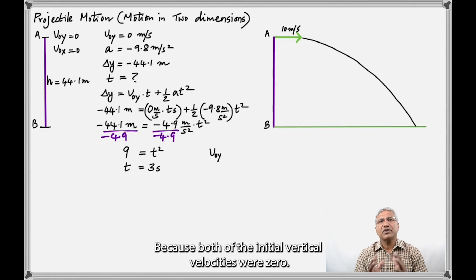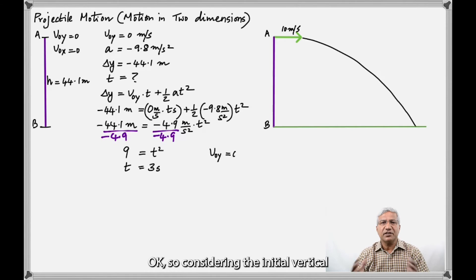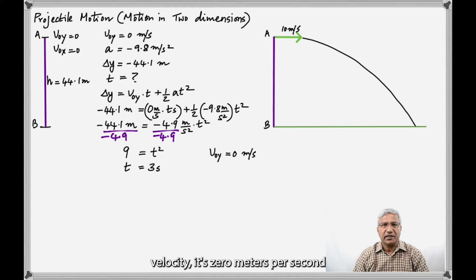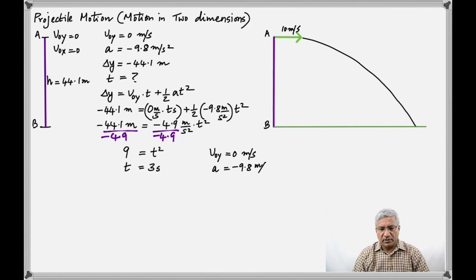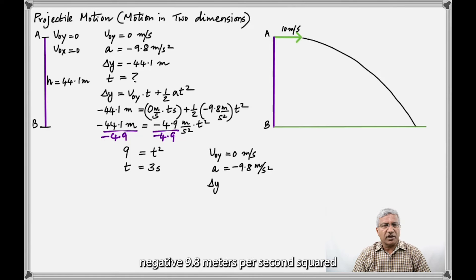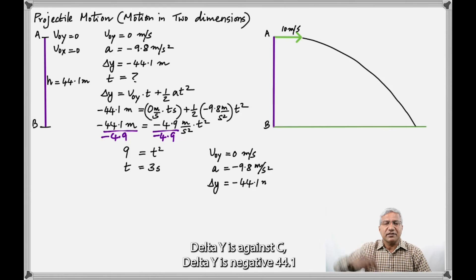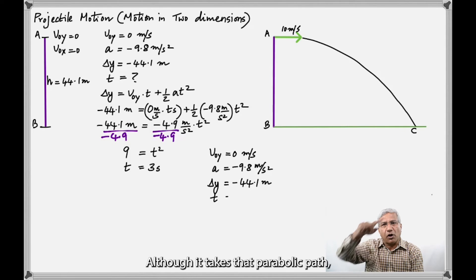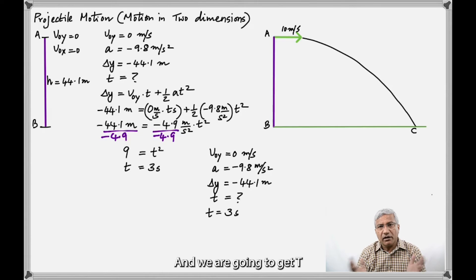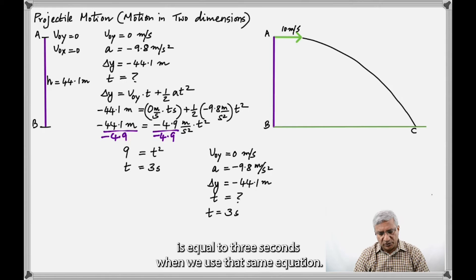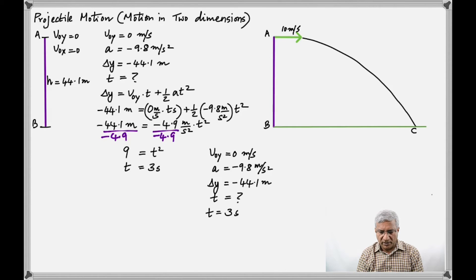Why? Because both objects' initial vertical velocities were zero. Considering the vertical quantities: initial vertical velocity is 0 m/s, acceleration is −9.8 m/s², and delta y is −44.1 meters. Although it takes a parabolic path, the vertical displacement is the same. Using the same equation, we again get t = 3 seconds.